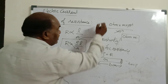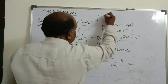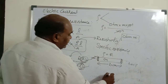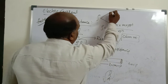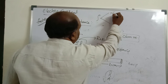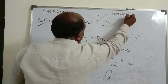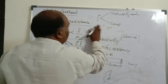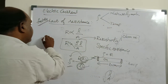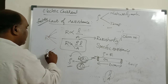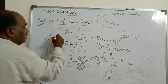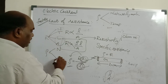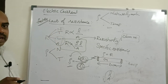Specific resistance depends on only two factors — because length and area are fixed. Those two factors are: number one, nature of the material; number two, temperature. Resistance depends on four factors; resistivity depends on only two factors: nature of material and temperature. Remember this important distinction. The remaining topics we will see in the next video. All the best.